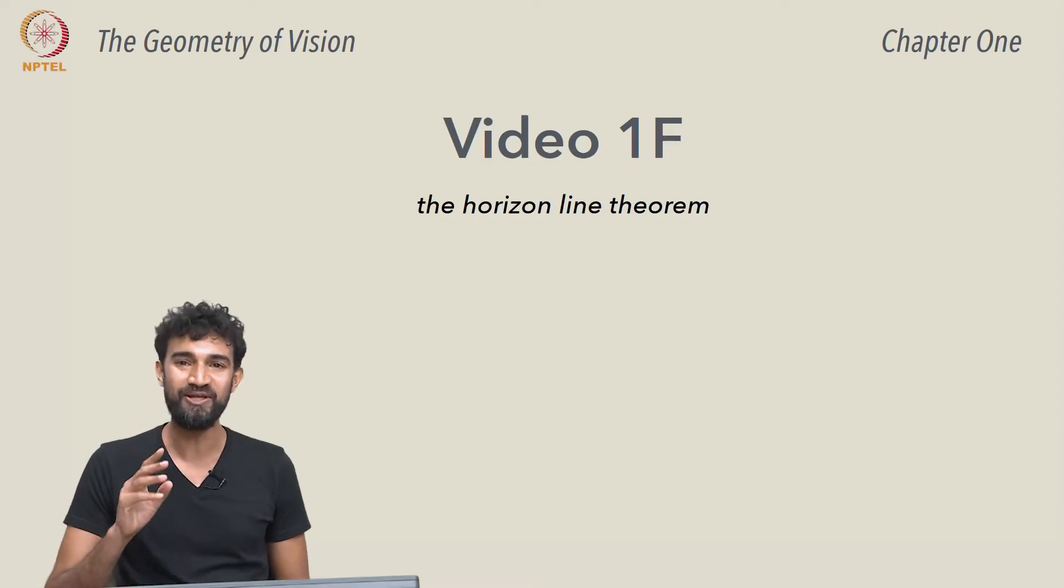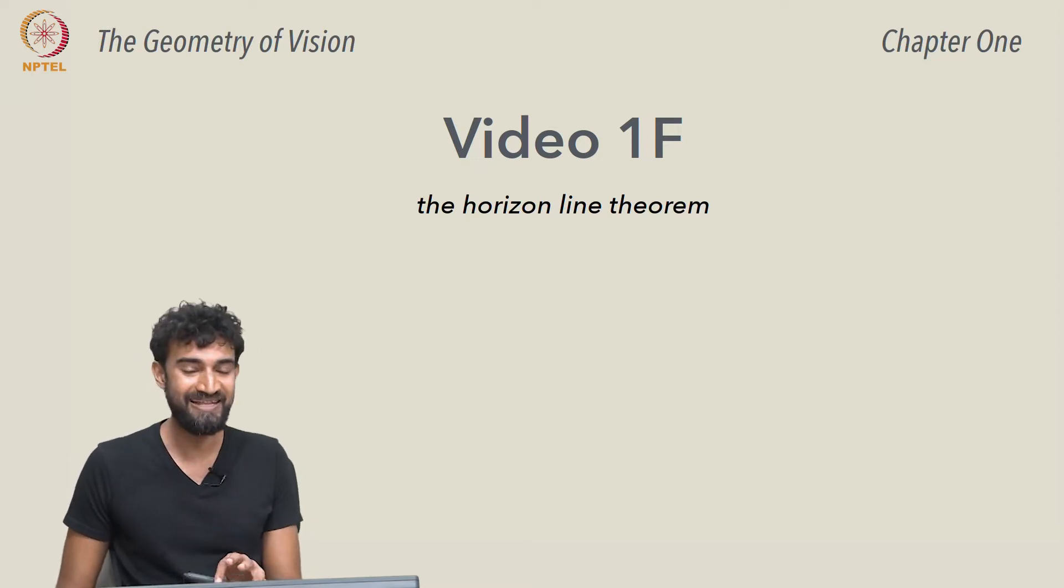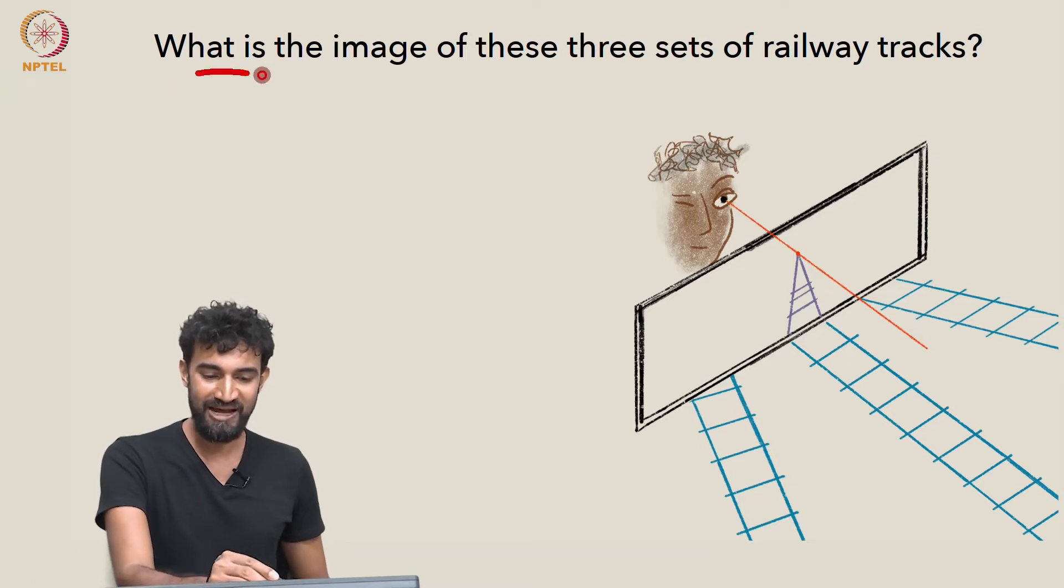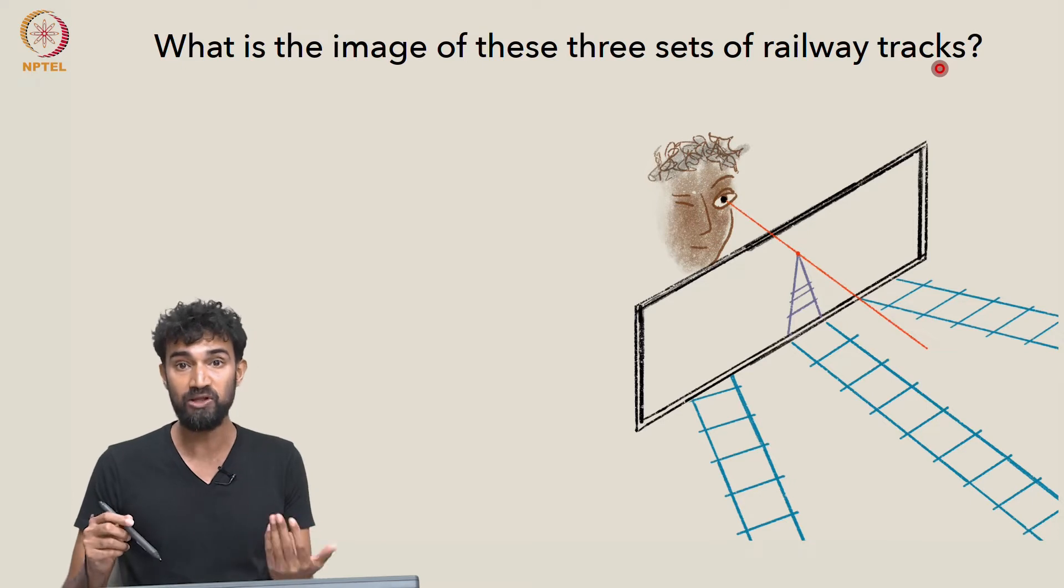So answering that question is going to lead us to another theorem. But before we get into that, let's try and answer the question. The question we asked is: what is the image of these three sets of railway tracks going to look like?